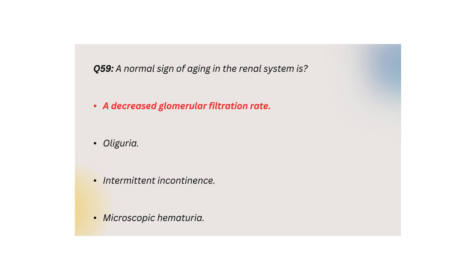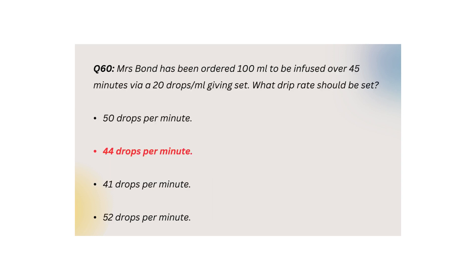Q59: A normal sign of aging in the renal system is decreased glomerular filtration rate, oliguria, intermittent incontinence, or microscopic hematuria. Q60: Mrs. Bond has been ordered 100 ml to be infused over 45 minutes via a 20 drops/ml giving set. What drip rate should be set? 50, 44, 41, or 52 drops per minute.